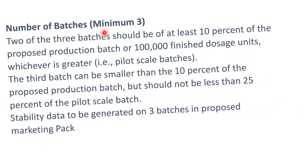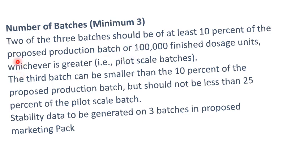Regarding the number of batches required: the minimum is 3 batches. Out of these 3 batches, 2 should be at least 10% of the proposed production batch, or 1 lakh finished dosage units, whichever is greater — these are the pilot scale batches. If the commercial batch is 10 lakhs, then 10% is 1 lakh. If the commercial batch is 5 lakhs, 10% would be 50,000.